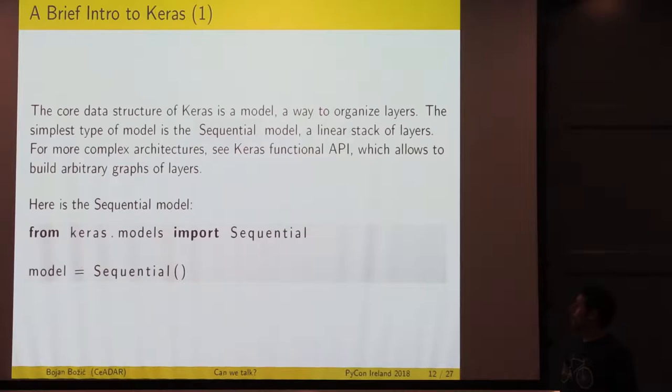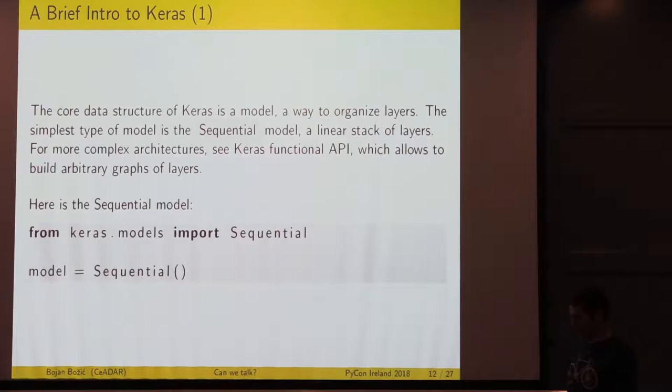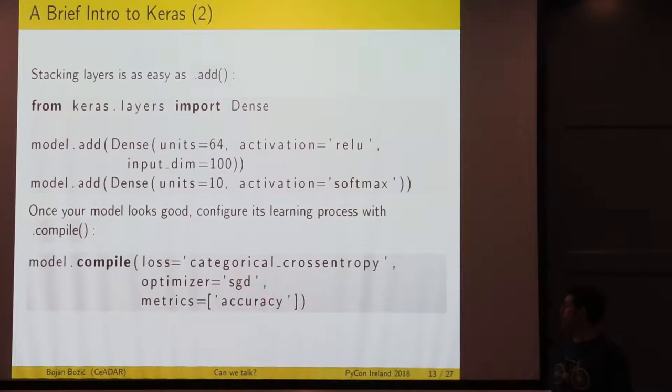Just a brief introduction. We have here, for example, a sequential model. That is the most basic thing to do in Keras. We define that we're going to sequentially add up layers for our deep learning network. Then we can use the add method to add a new layer. Here we have two dense layers with 64 and 10 units. We have different activation functions like ReLU and Softmax. When we compile the model, we can define what to use to calculate the loss, for example categorical cross entropy. We have the optimizer and metrics like accuracy.